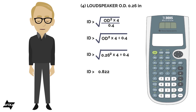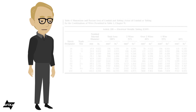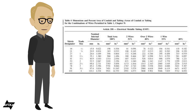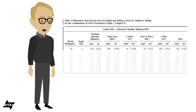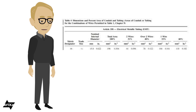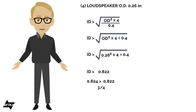I'll take that 0.822 result and compare it to available conduit sizes. A trade size one-half has an inner diameter of 0.622 — that's too small. A three-quarter has 0.824. Since 0.824 is larger than 0.822, that would actually work. So in this particular case, I can use the three-quarter conduit.